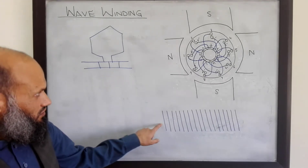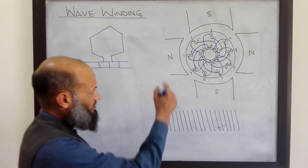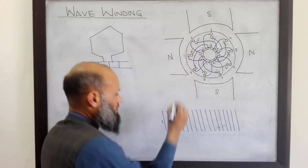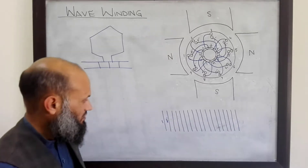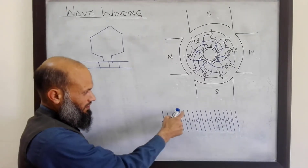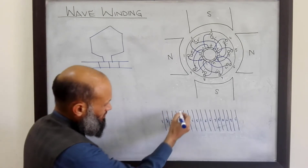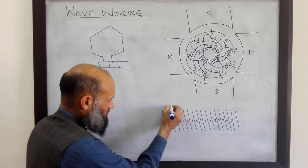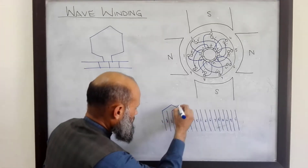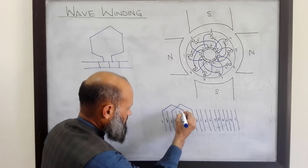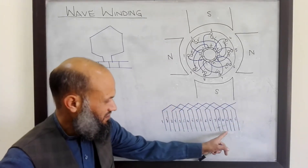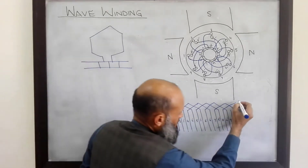We have 18 conductors placed in the rotor. These are placed in a sequence. First we have conductor one, and adjacent to it is eight-dash, and then two. One and one-dash are two sides of the same coil, so at the back end these coils are shorted. Likewise, two is connected to two-dash, and so on. Eight is connected at the back end with eight-dash.